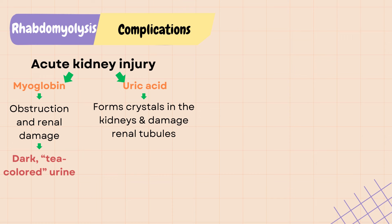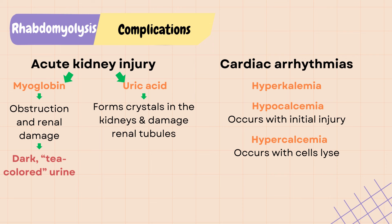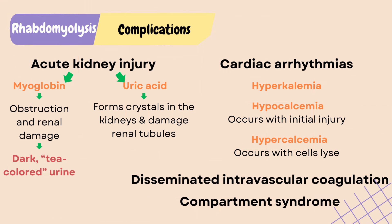Besides myoglobin and uric acid, dead cells release electrolytes into the blood, causing hyperkalemia, or elevated potassium. There is also a calcium imbalance: hypocalcemia occurs with initial injury as calcium moves into the muscle cells, but as the cells die, calcium is released into the bloodstream causing hypercalcemia. Both hyperkalemia and hypercalcemia can lead to cardiac arrhythmias and possibly deadly rhythms. Other complications include disseminated intravascular coagulation (DIC), a clotting disorder due to thromboplastin release, and compartment syndrome, especially with traumatic causes, due to swelling at the injury site impeding blood flow.